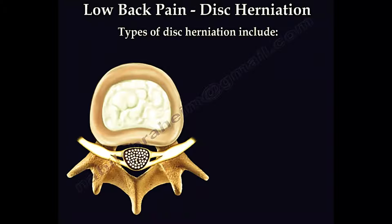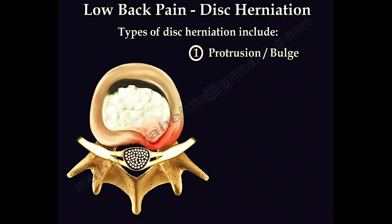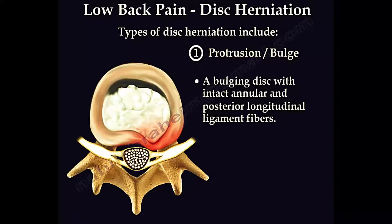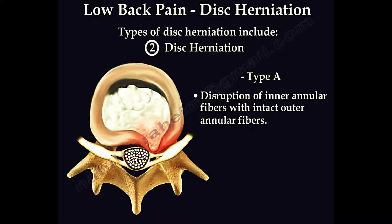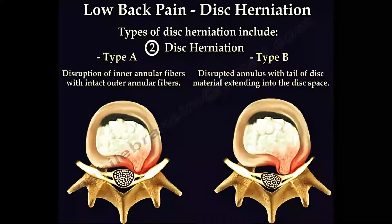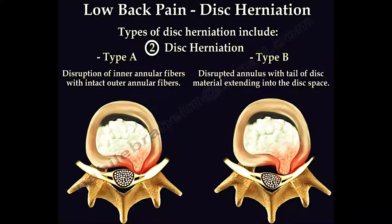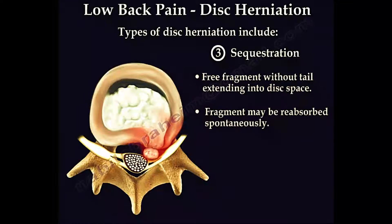There are three types of disc herniation. The first is a protrusion or bulge, which is a small bulge of the disc with intact annular and posterior ligaments. The second type is disc herniation, where there is disruption of the annular fibers either partially or totally, with a tail of disc material extending into the disc space. The third type is a sequestered disc, a free fragment without a tail extending into the disc space, which may be reabsorbed spontaneously and may respond to epidural injection.